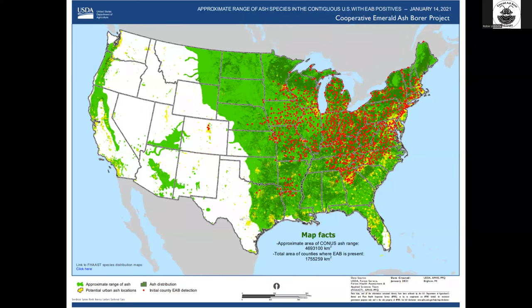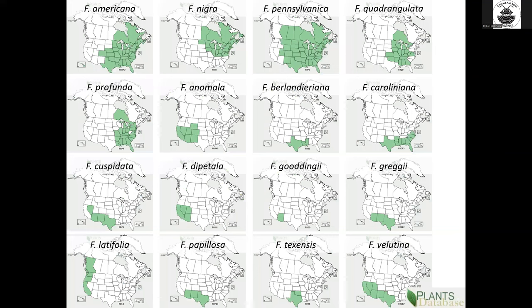Emerald ash borer infestation has spread through a large range of what is inhabited by ash species here in the US. There are still some areas with a lot of ash density that are not yet infested, and those areas are a particular concern as emerald ash borer continues to spread. When we talk about ash being infested by emerald ash borer, there are actually multiple ash species — 16 different ash species here in the US. Five of them are native to Ohio, and these species are all very different ecologically. They inhabit different types of habitats and play different roles in their forest ecosystems, so we really need to think about the impacts and management of emerald ash borer separately for these different tree species.